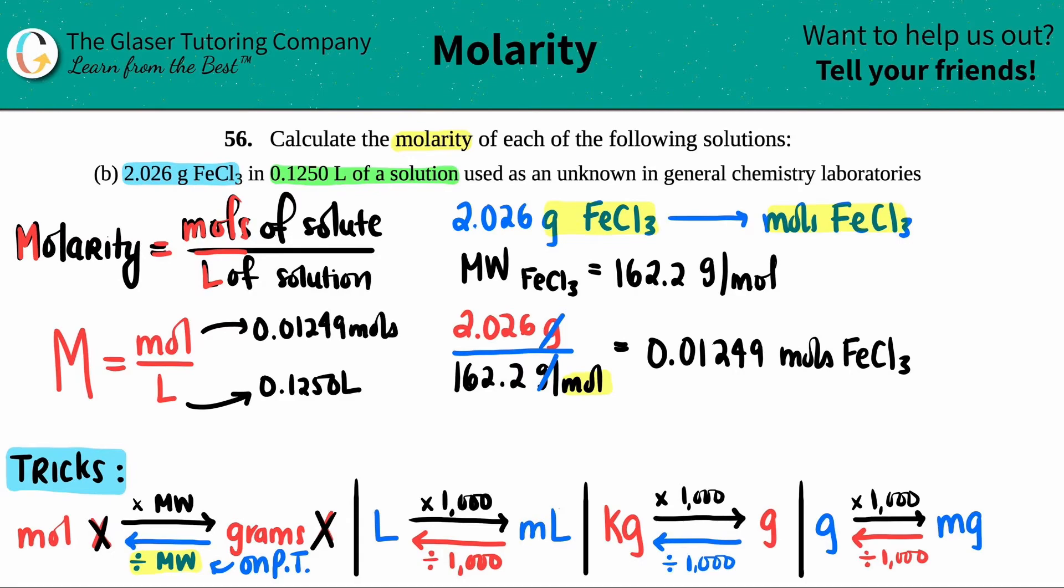So now we're ready to solve for capital M, big molarity. Molarity equals the moles: 0.01249 moles. I'm just going to keep the units to show you what the units for molarity is when we get our answer.